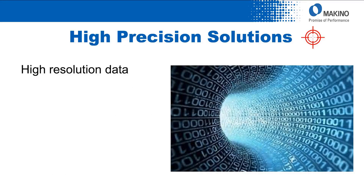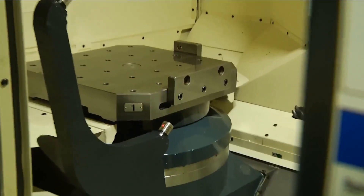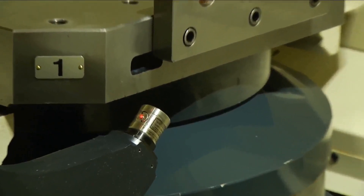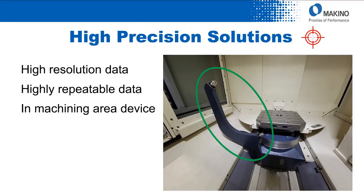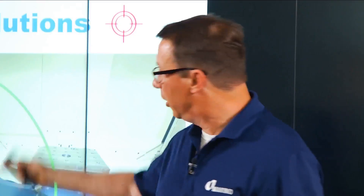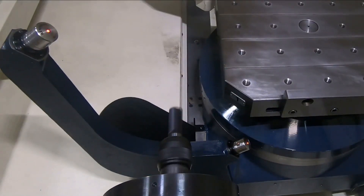So let's go to the first subset — the high precision solutions. You're going to be looking at very high resolution data that's highly repeatable, data on the spectrum of what you might expect to get from your high precision CMM, but inside the machine tool itself translated to that cutting tool. It's going to be typically a device that's always in the machining area, always accessible during the cutting process. A good illustration here shows a pair of lasers pointed at each other — a emitter and receiver on what I'll call a goalpost style setup, very accessible in the machining area during the cutting process itself.